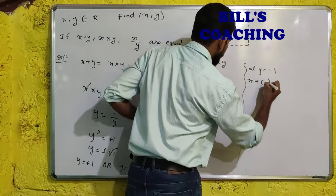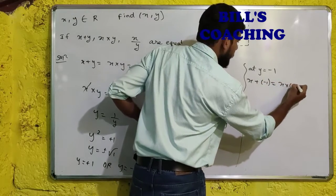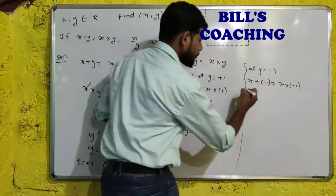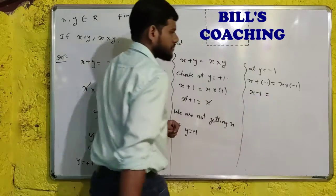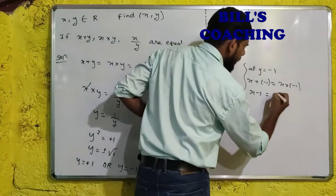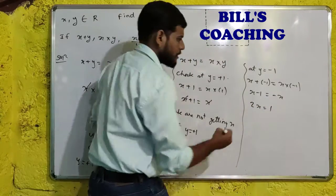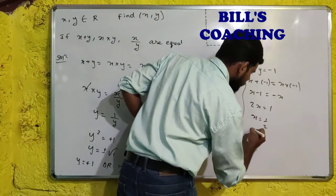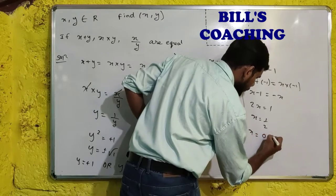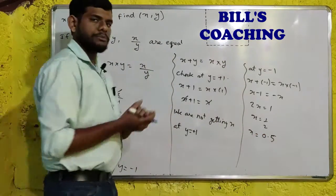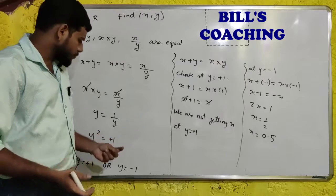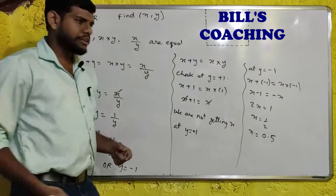So x minus 1 will be equal to x multiplied by minus 1. Let us take now. So this will become minus 1, and what we will get? Minus x. Bring x on this side, what will remain? 1. x will be equal to 1 upon 2, and x will be equal to 0.5 which is a plus value. Done.